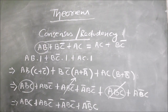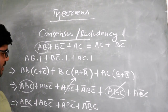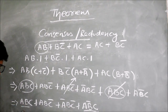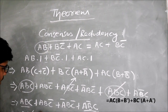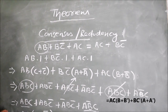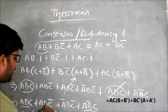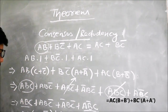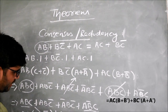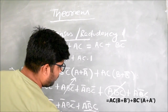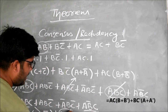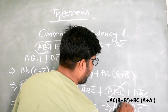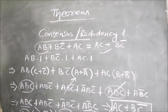Since B + B̅ equals 1 and A + Ā equals 1, those terms drop out. This gives us AC plus BC̅, which is exactly what we wanted to prove. So the Redundancy or Consensus Theorem is verified: AB + BC̅ + AC simplifies to just AC + BC̅, confirming that AB was the redundant term.